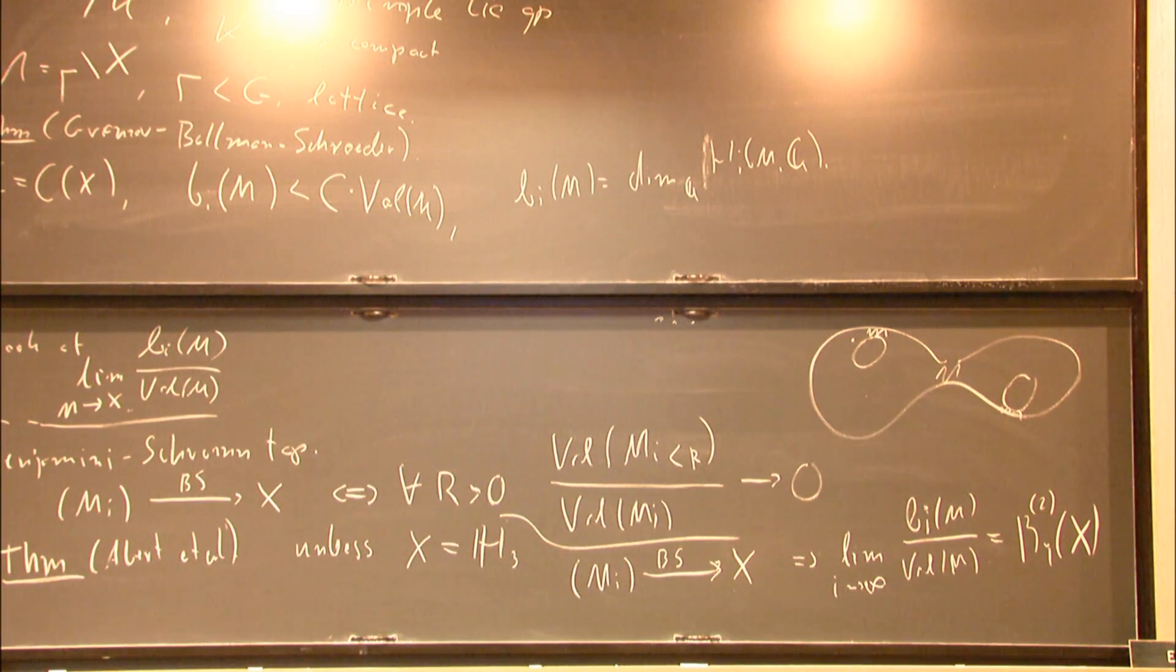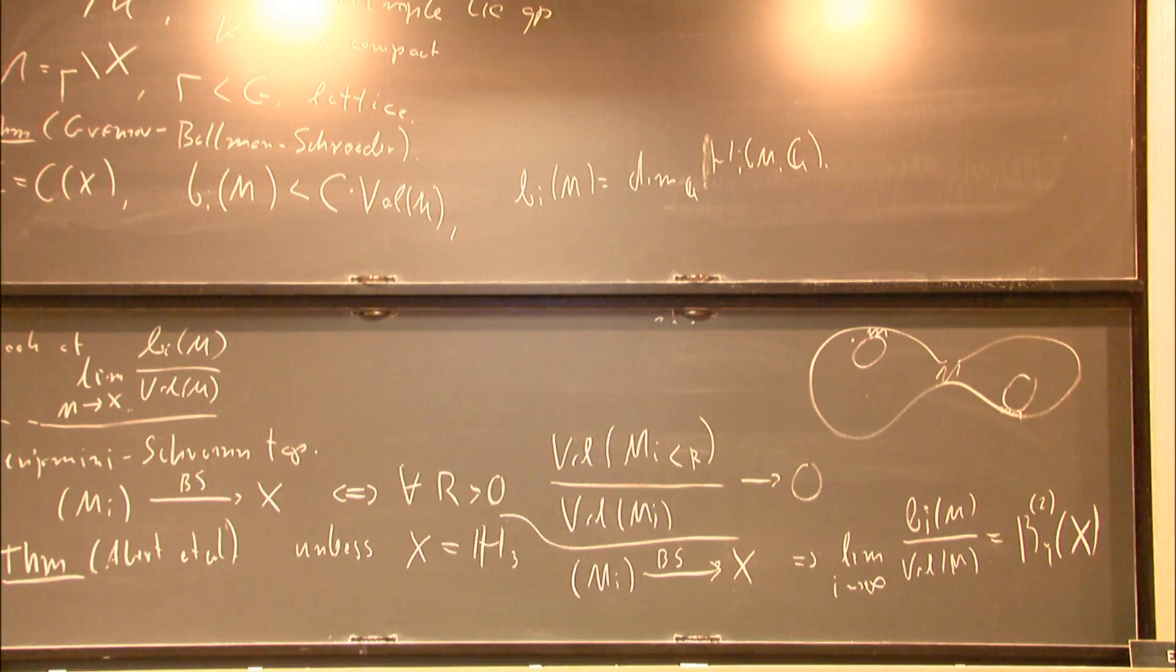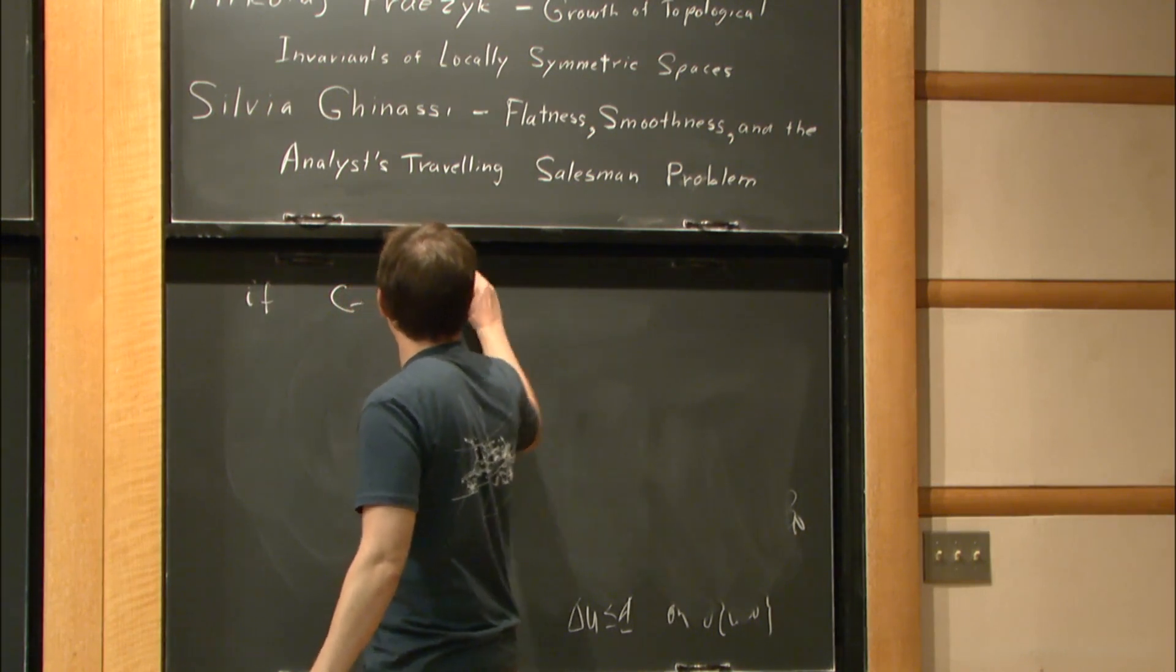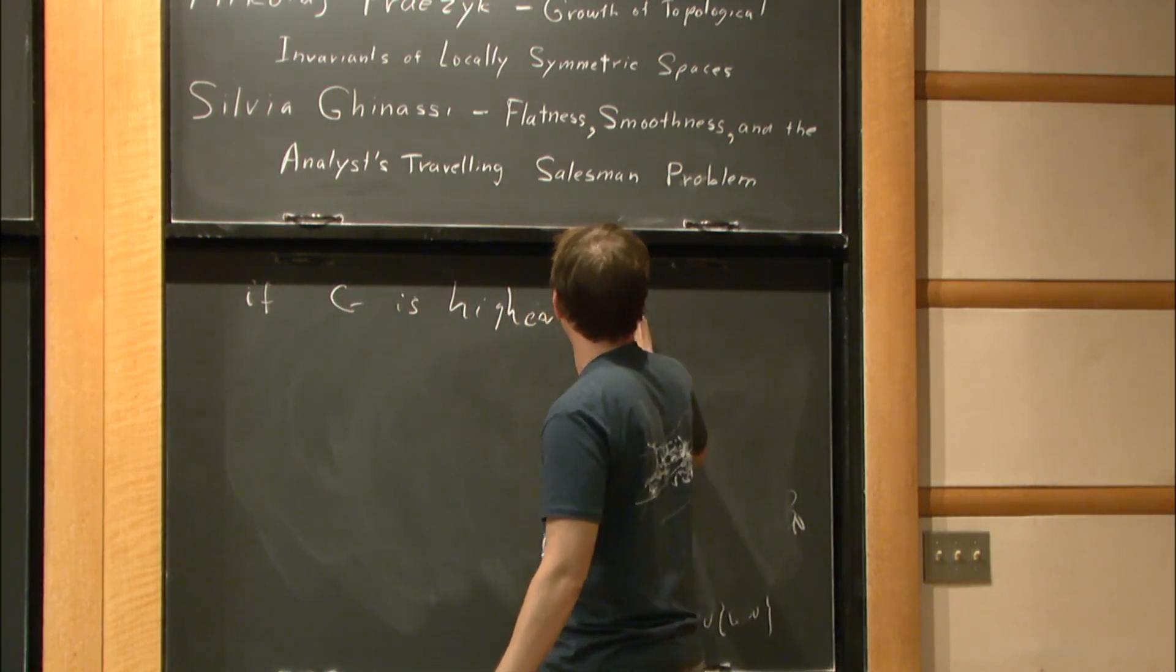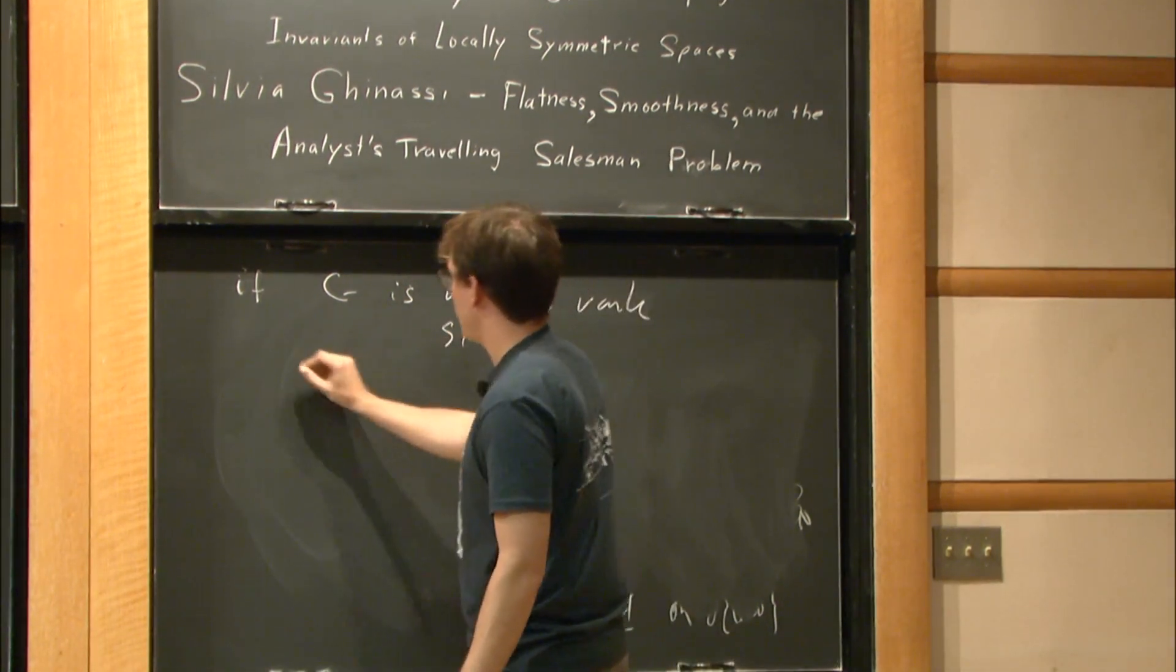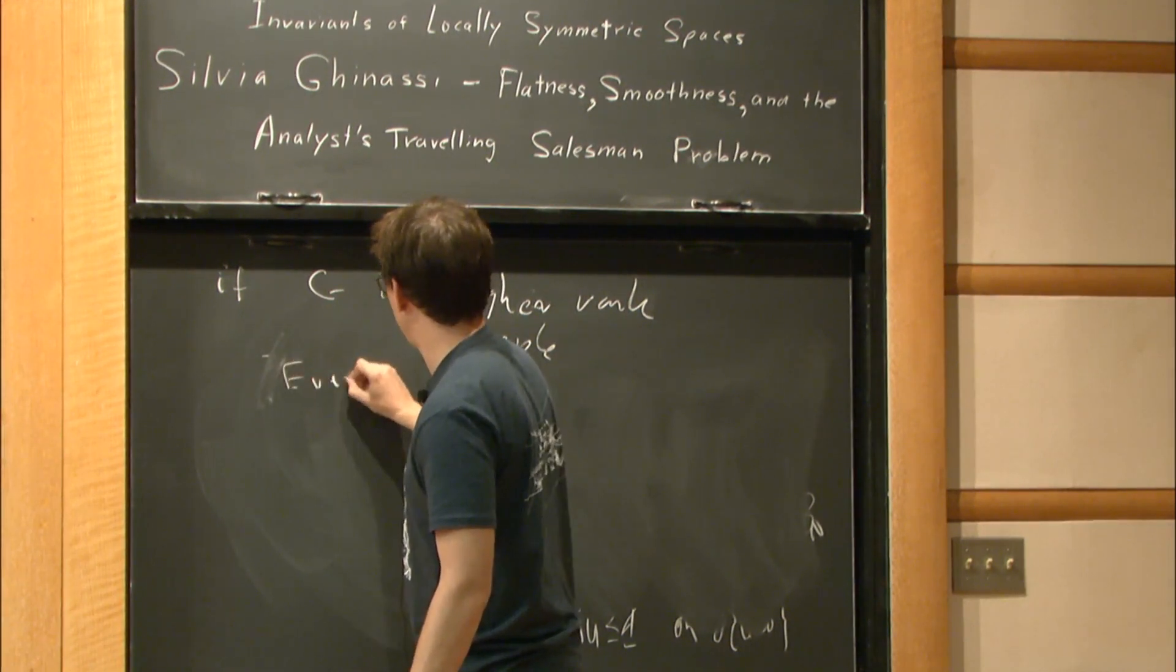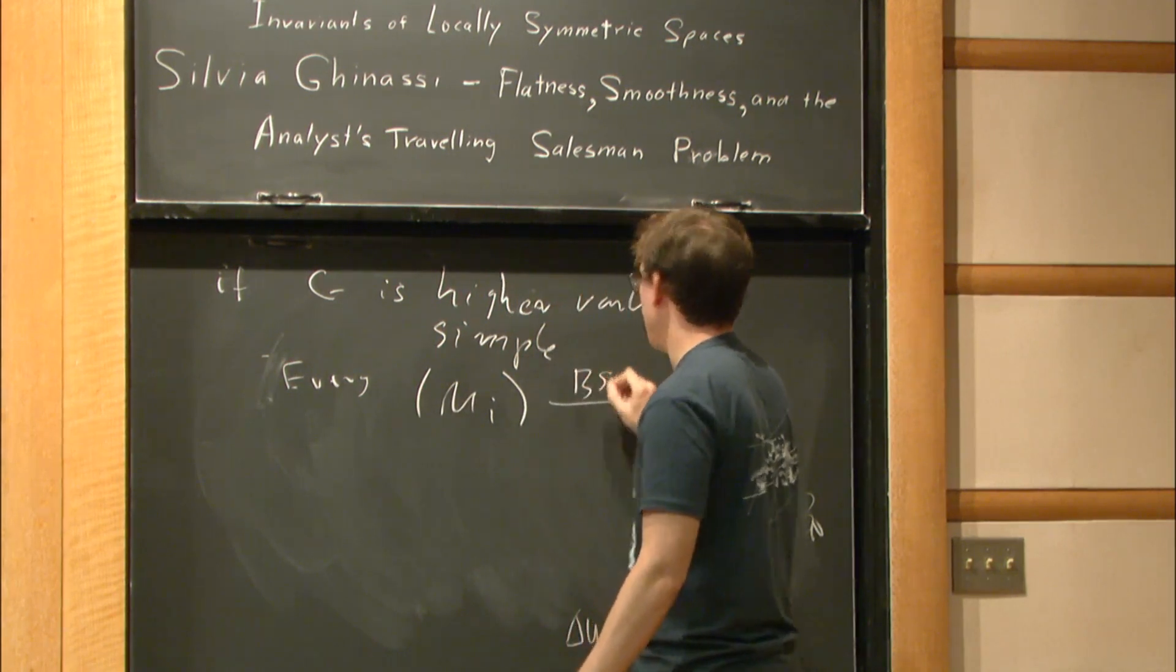Now this condition looks a bit maybe strong, but turns out it's very generic. For example, if G is higher rank simple, then every sequence, every M_i, converges Benjamin-Schramm, unless they stabilize.